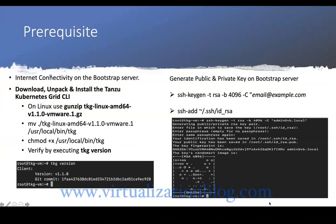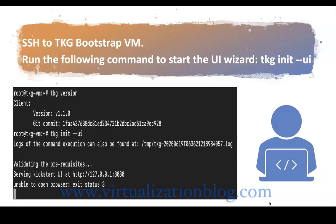Before proceeding, please make sure you have the Bootstrap server deployed and configured with the required prerequisites. Log into the Bootstrap server and validate the TKG CLI version. In this demonstration I have configured TKG CLI version 1.1. With CLI version 1.1 you can deploy a Kubernetes cluster of 1.17.3 and 1.18.2.